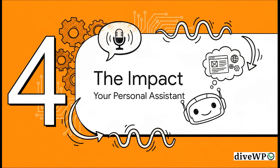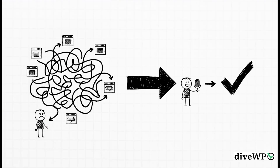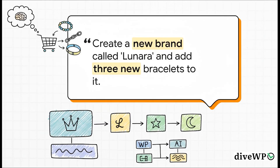So what does this actually mean for you, the person using the site every day? This is not just some abstract thing for developers — it fundamentally changes how you manage your website. Basically, your website becomes your personal assistant. It means we go from clicking through five different admin screens just to change one little setting, to just telling your site what you want in plain English. All that complexity just gets handled in the background. Check out this example for an e-commerce store — a single sentence could easily replace dozens of clicks inside WooCommerce. It's a whole multi-step workflow: first create a brand, then create three separate products, then assign them to that brand, all from one simple command.